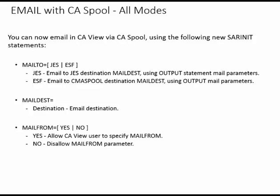You can now email in CA View via CA Spool using the following new SAR and IT statements. Mail 2 equals JES or ESF. JES is email to JES destination mail desk using output statement mail parameters. ESF is email to CMA Spool destination mail desk using output mail parameters. Mail desk is the email destination, and mail from is either yes or no — yes allows the CA View user to specify mail from, no disallows the mail from parameter.